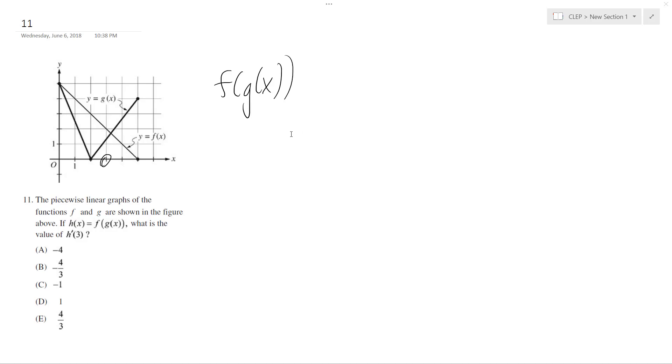So how we're going to do this is we're going to find the equation for each line, plug it into the function, and then take the derivative. So finding g of x - they point to g of x here on the graph,